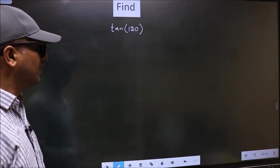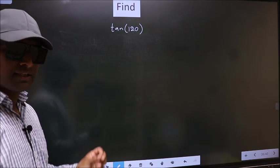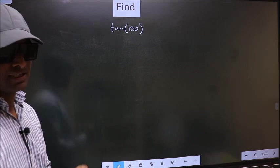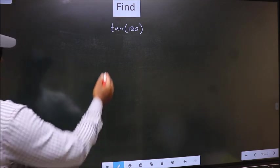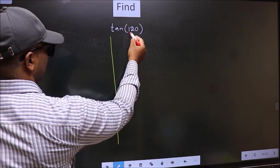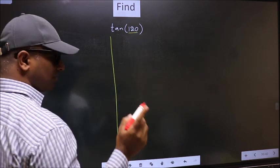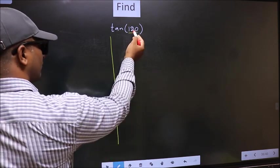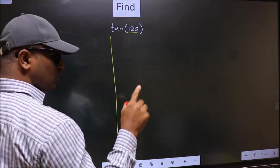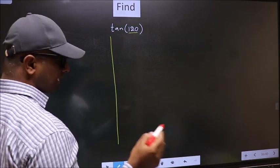Find tan 120. To find this, we should follow this method. See, here we have 120. Now we should check 120 lies between which two multiples of 180.